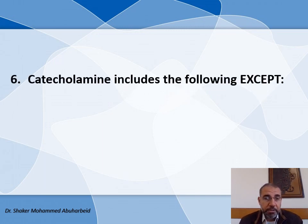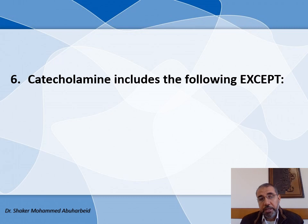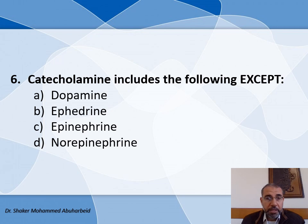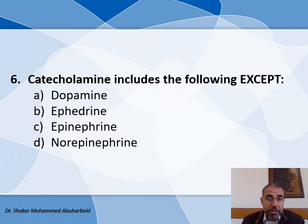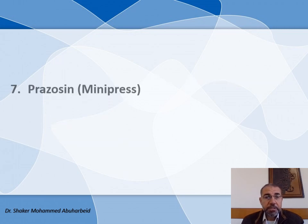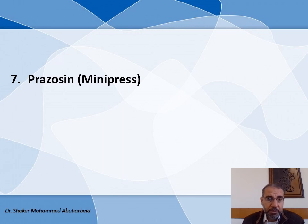Question number six: Catecholamines include the following except — we will try to find the incorrect answer. The choices are: A) Dopamine, B) Ephedrine, C) Epinephrine, and D) Norepinephrine. Dopamine, epinephrine, and norepinephrine are all catecholamines, but Ephedrine is a non-catecholamine, so the answer is Ephedrine.